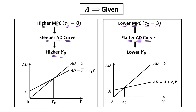In the case of a steeper AD curve there will be a higher equilibrium level of output, and in the case of a flatter aggregate demand curve there will be a lower equilibrium level of output. As you can compare in these two figures, higher MPC leads to a steeper AD curve and higher equilibrium output.